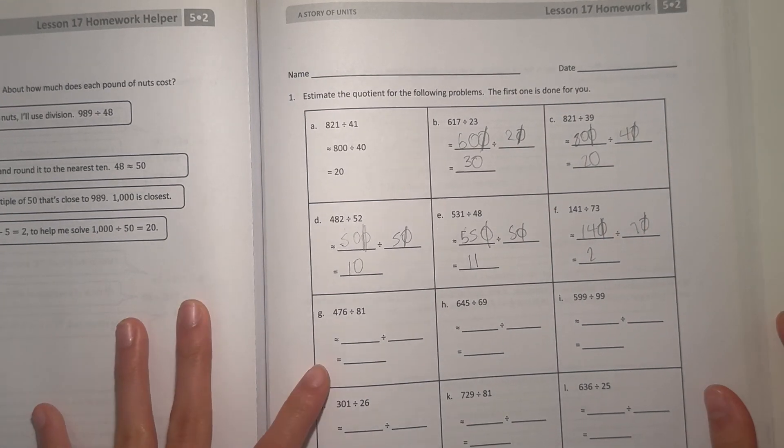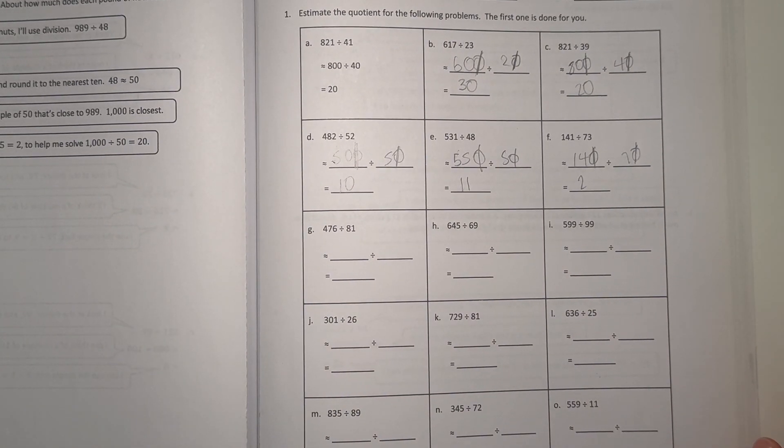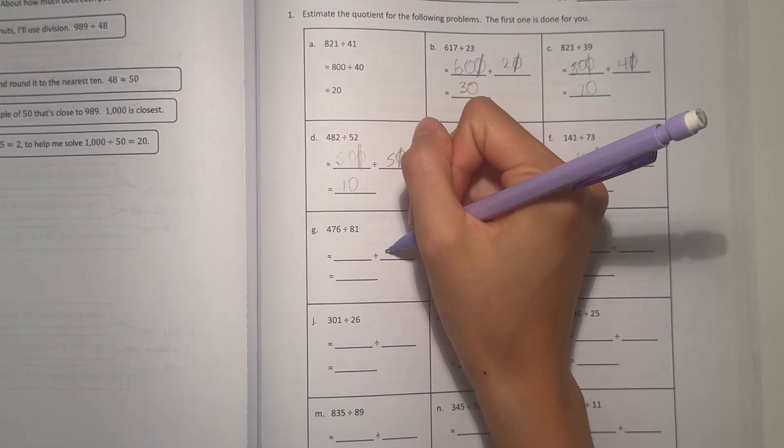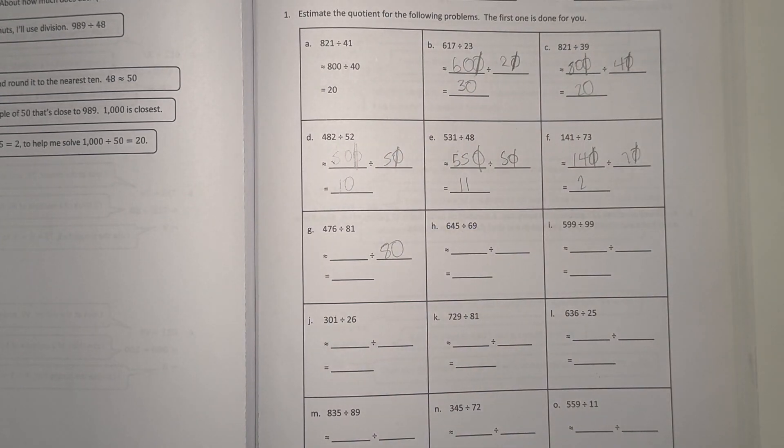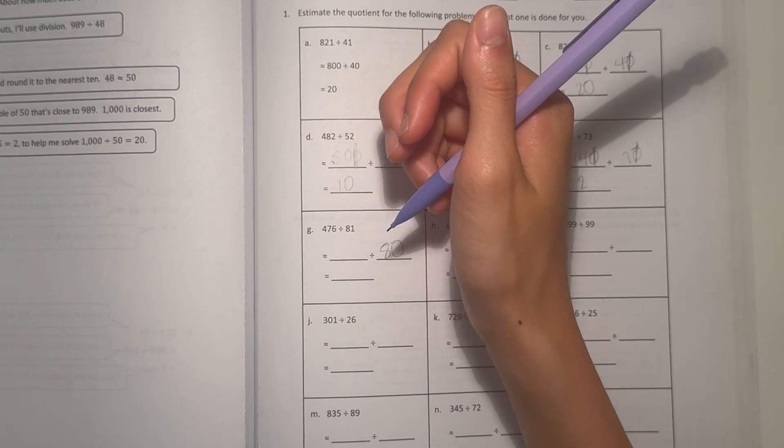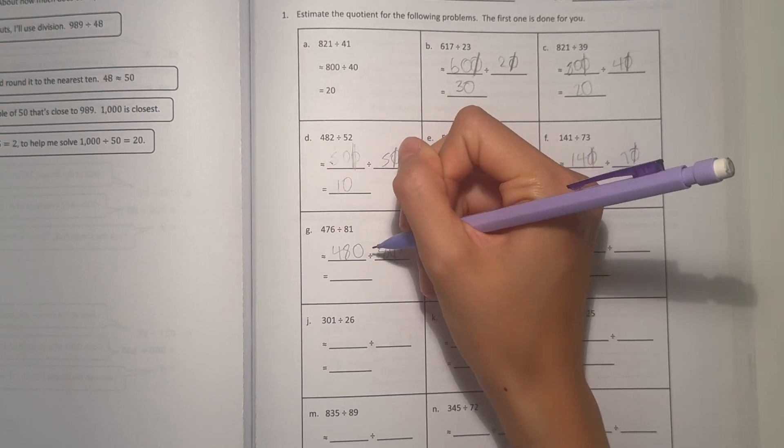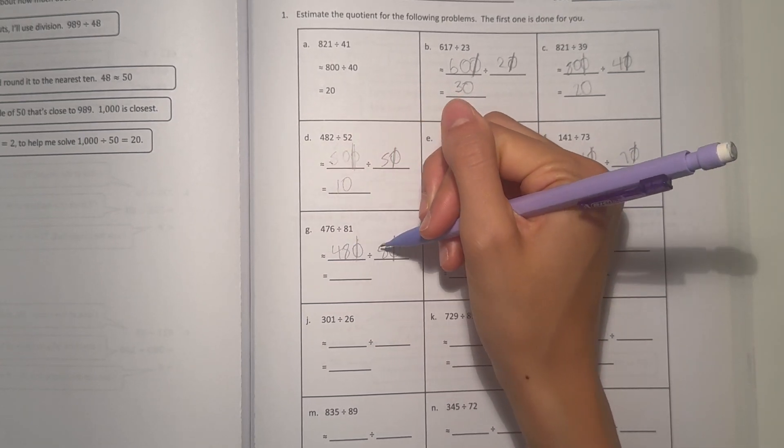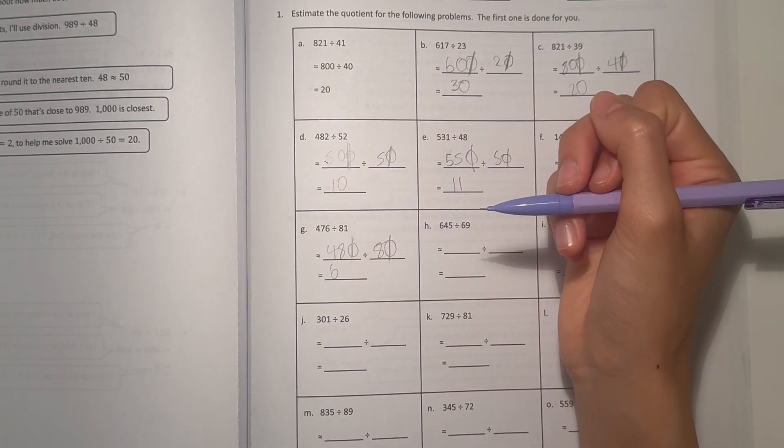All right, and G, let's see. We have 476 divided by 81. 81 can round to 80. So what's the number close to 476 that goes easily into 8? Well, 480 can go, and cross off the zeros. That leaves us with 48 divided by 8, which is 6.